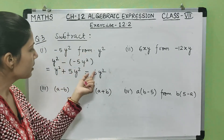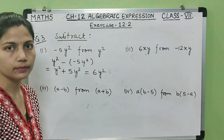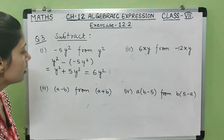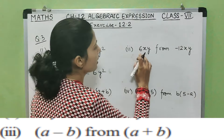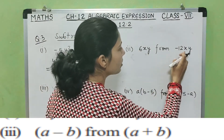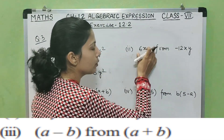So the answer of this subtraction is 6y². Now let's see the second part: subtract 6xy from minus 12xy.